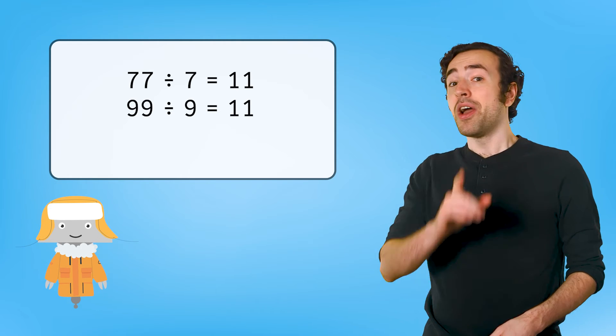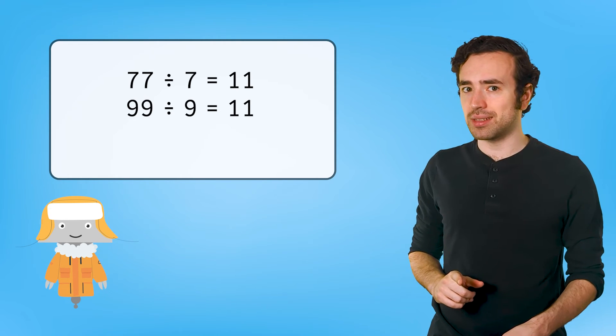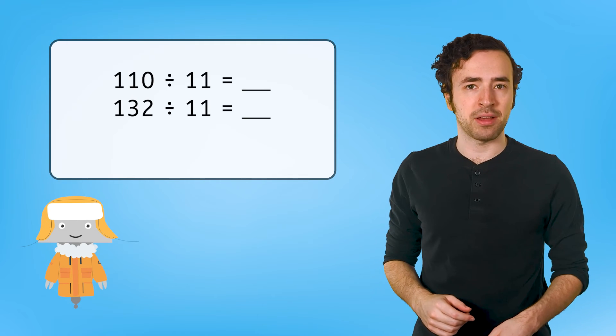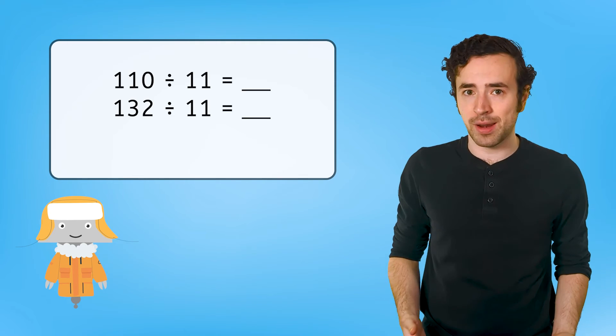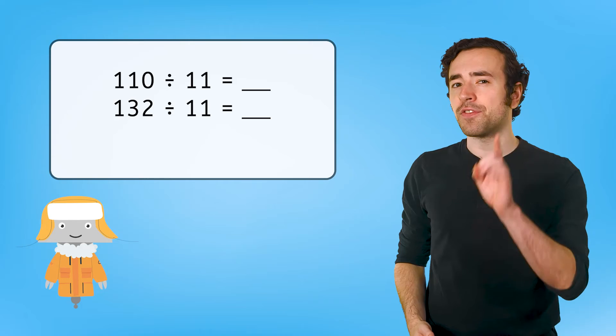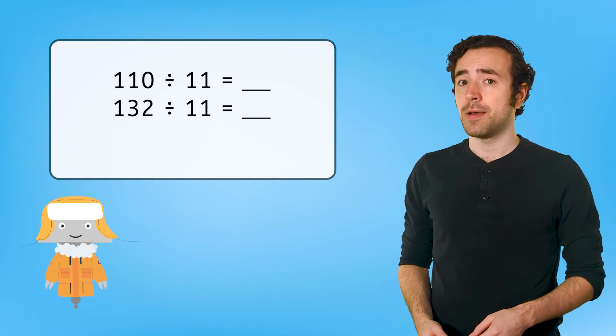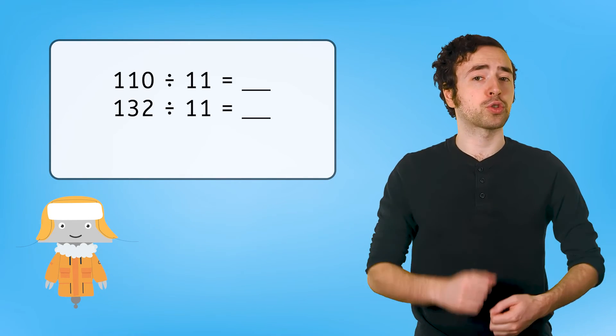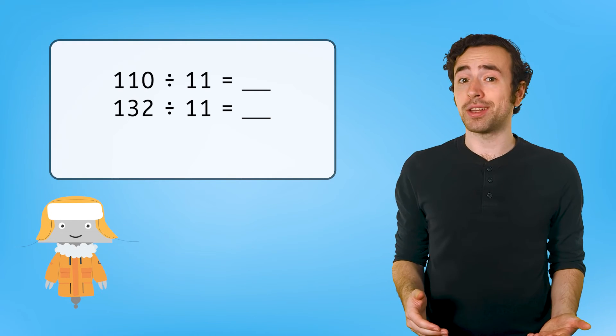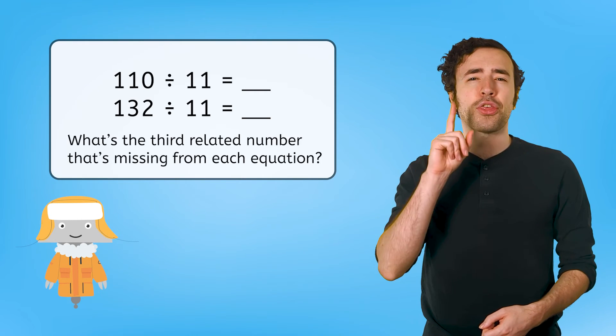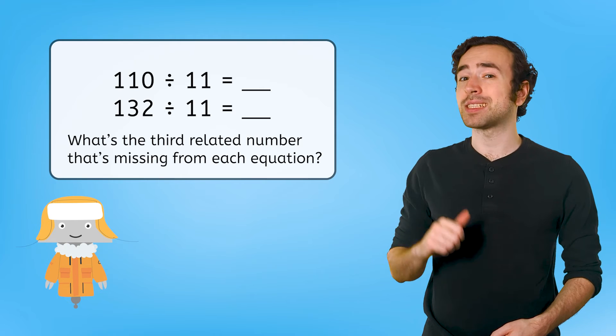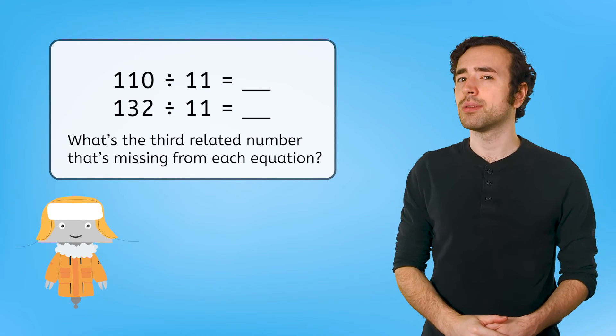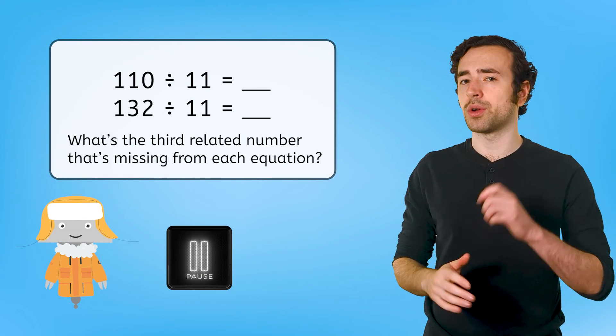Ooh, that's right, Bevan. For problems with three-digit dividends, like 110 divided by 11 and 132 divided by 11, we can use our fact families to help us solve. Think back to our earlier work with partial products. You can even look back in your guided notes. What's the third related number that's missing from each equation? Pause here and record your thinking.